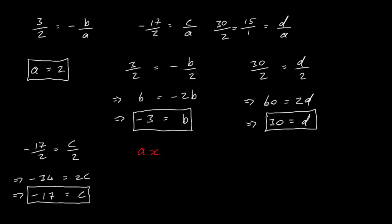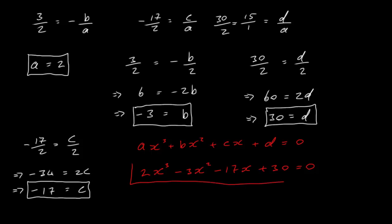With all four coefficients found, our cubic equation is 2x cubed minus 3x squared minus 17x plus 30 equals zero. You can multiply across by any number to get another valid equation — there are infinitely many — but this is a neat one. The roots minus three, five over two, and two satisfy this equation. That's it for this video on Vietta's formula.